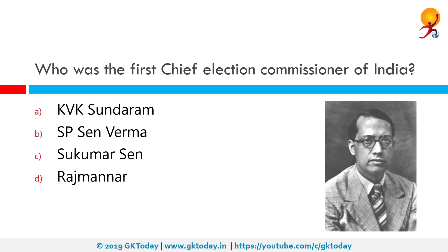Who was the first Chief Election Commissioner of India? The correct answer is Sukumar Sen. Sukumar Sen was an Indian civil servant who served as the first Chief Election Commissioner of India from 21st March 1950 to 19th December 1958. Under his leadership, the Election Commission successfully administered and oversaw independent India's first two general elections, held between 1951 and 1952 and in 1957.